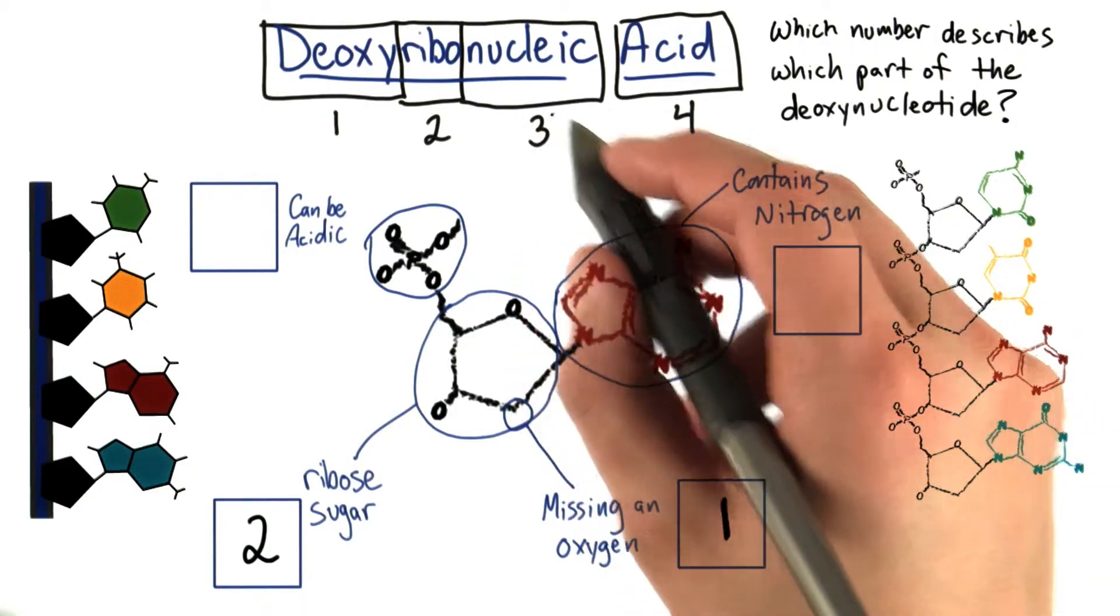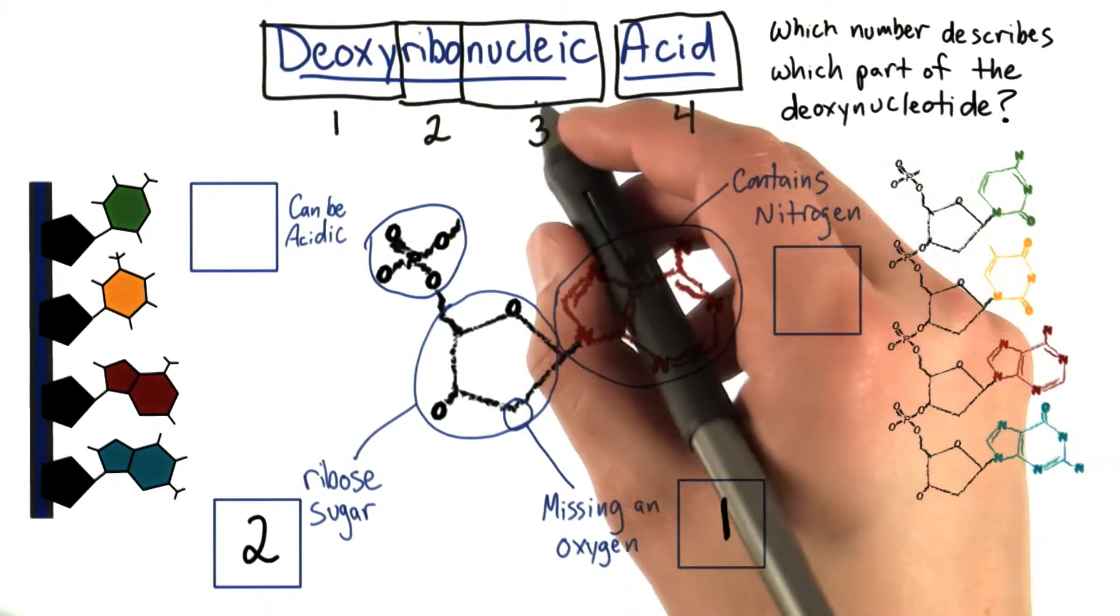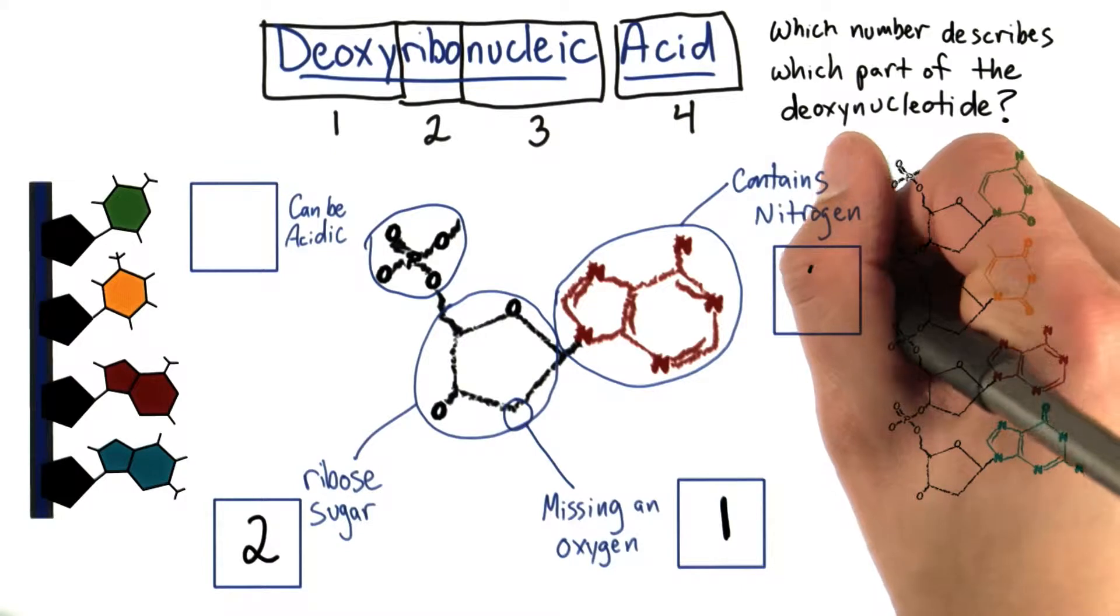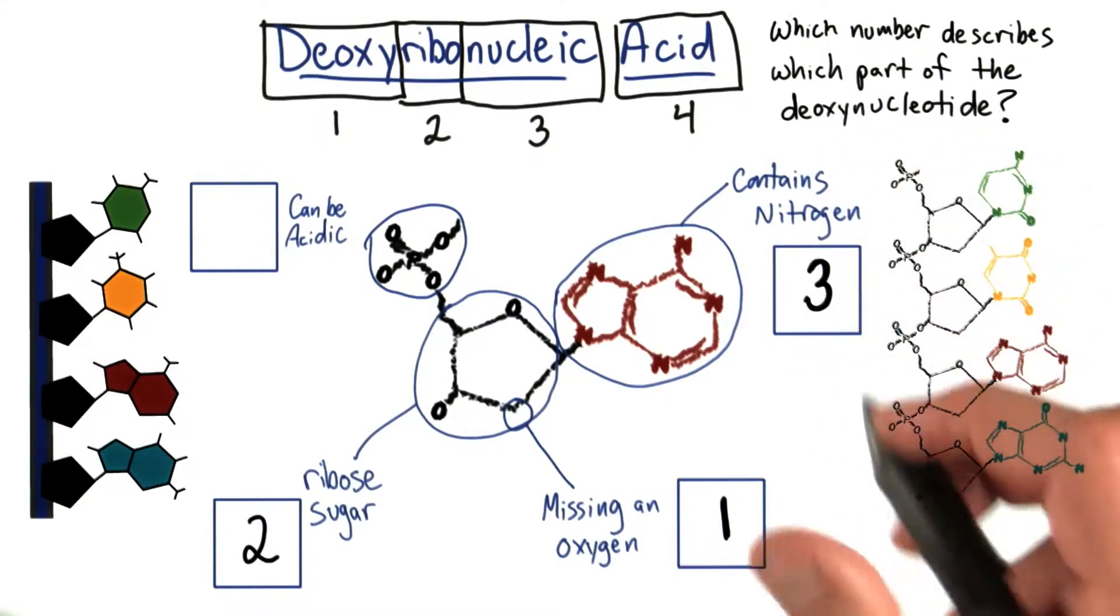Nucleic was probably the toughest one if you couldn't figure it out. Actually represents the nitrogenous base here, or the nucleic acid. This means that it's found in the nucleus.